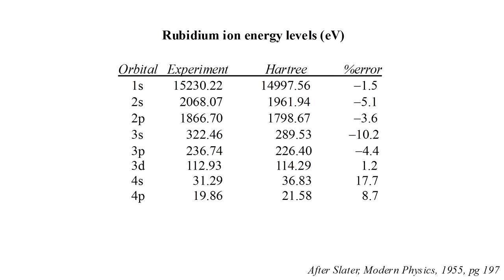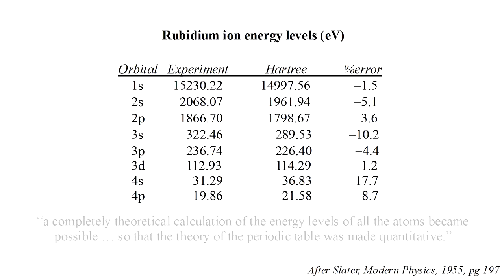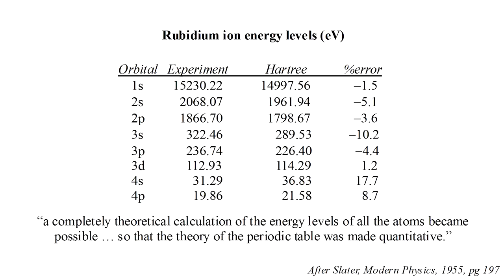The energies of electrons in different orbitals can also be measured experimentally. For the inner core electrons with very large binding energies, this can be done by illuminating the atom with X-ray photons of the corresponding energy. Here we see experimental values for the rubidium ion, compared to the results of Hartree's theory. The level of agreement between Hartree's theory and experiment led physicist John Slater to conclude that with it, a completely theoretical calculation of the energy levels of all the atoms became possible, so that the theory of the periodic table was made quantitative.